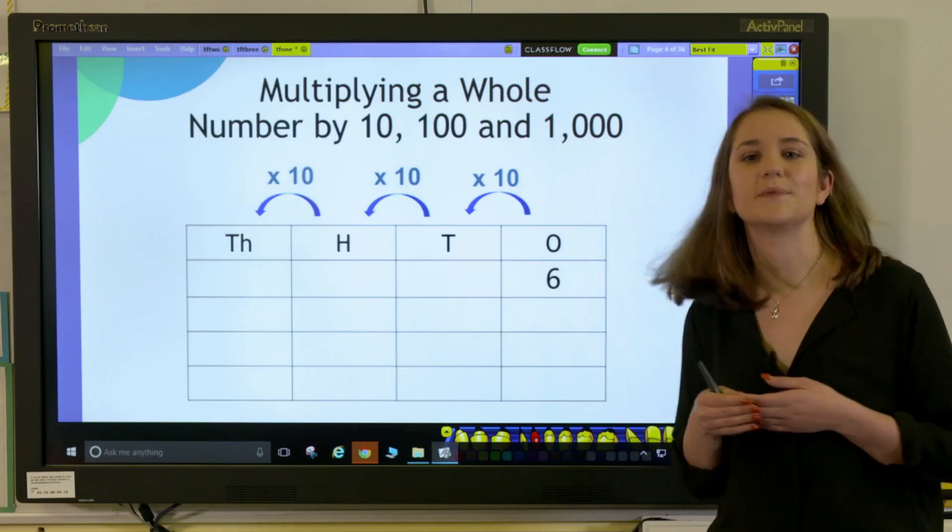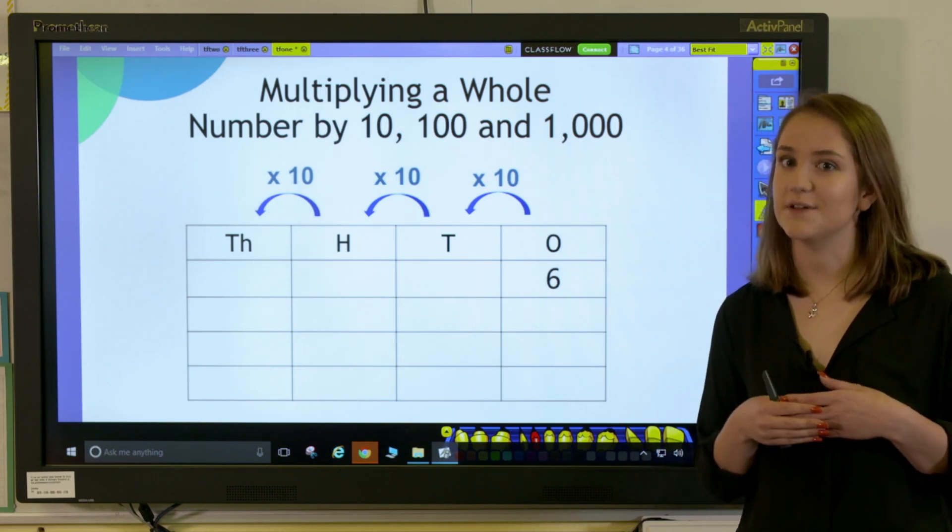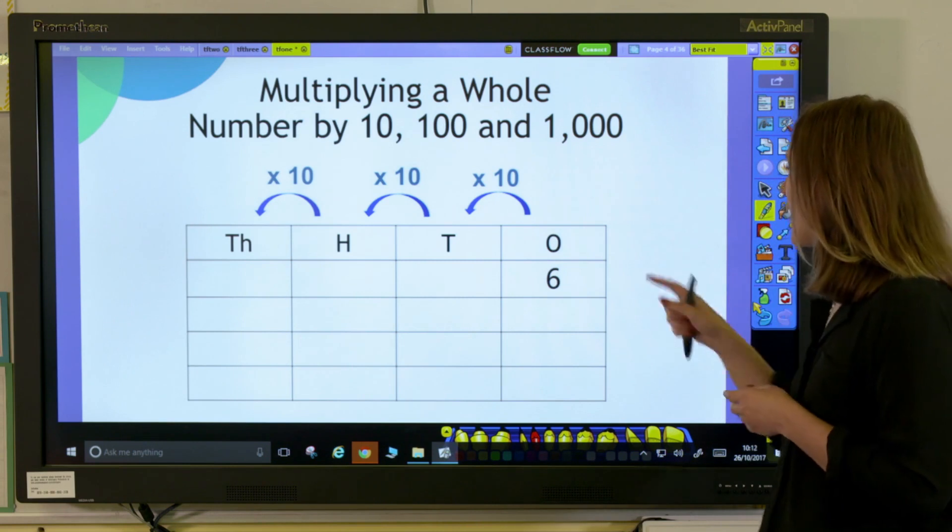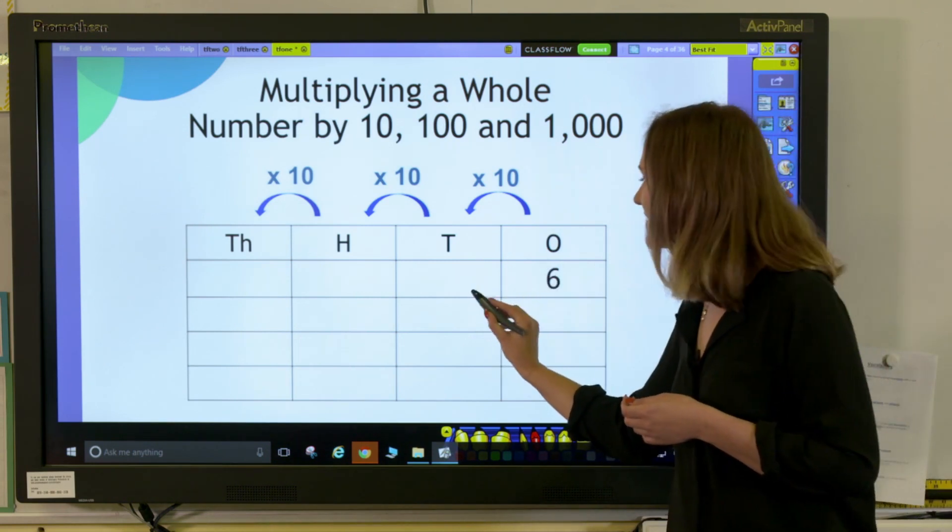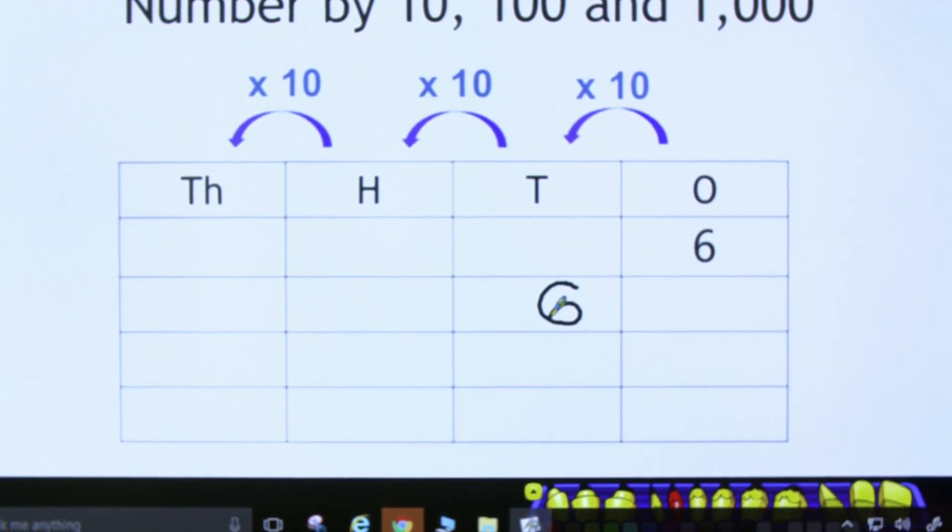What's going to happen when we multiply it by 10? It's a good idea to ask your pupils what they think is going to happen first of all. Our 6 is going to move one place to the left to the 10s column. This is because the 10s column is 10 times greater than the 1s column.